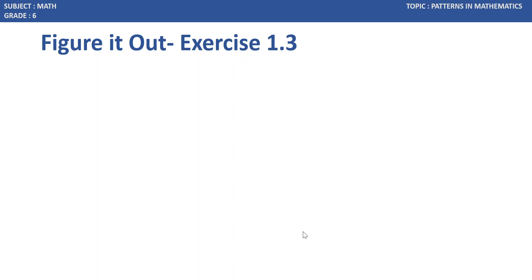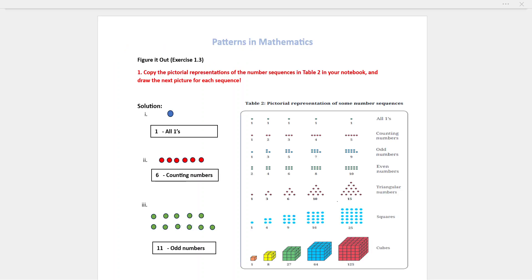Exercise 1.3, first question: Copy the pictorial representation of the number sequence in Table 2 in your notebook and draw the picture representation. This is the pictorial representation given in the textbook. The first sequence — if we observe — is 1, and the next number is also 1. So the answer for this one is 1; you can represent it in the form of 1 circle. The sequence name is All Ones.